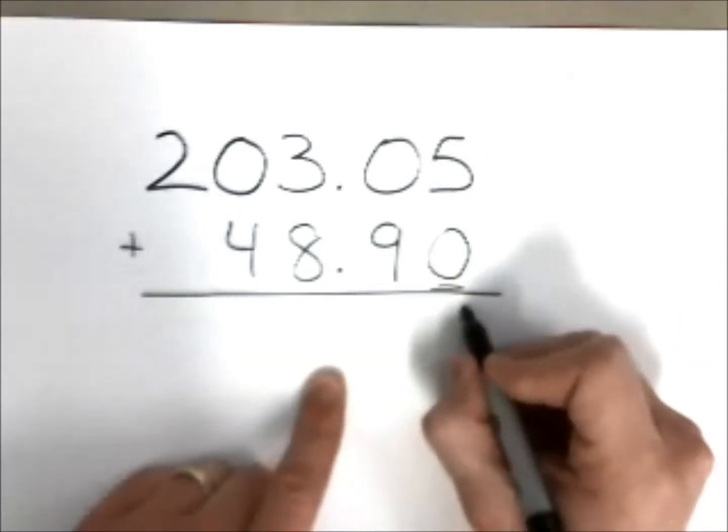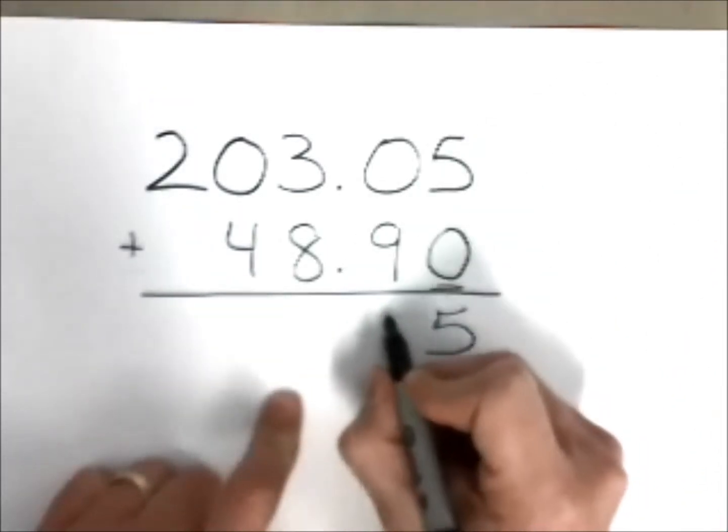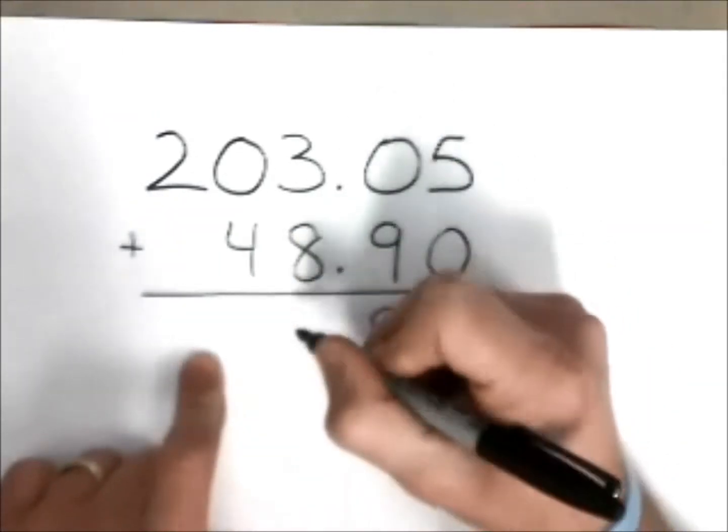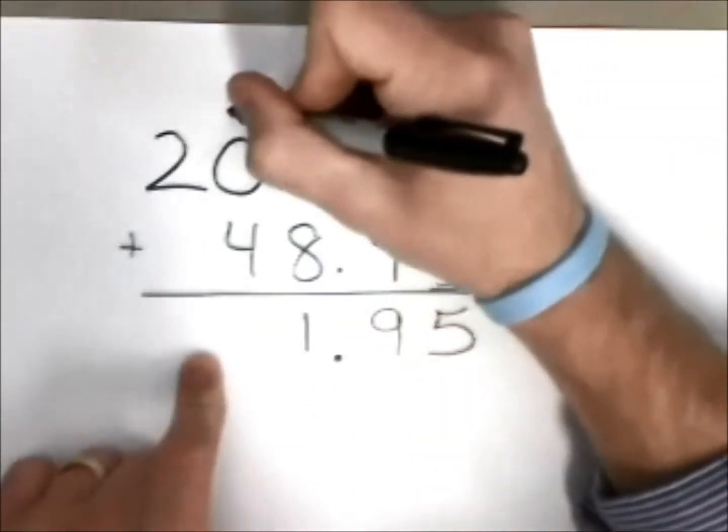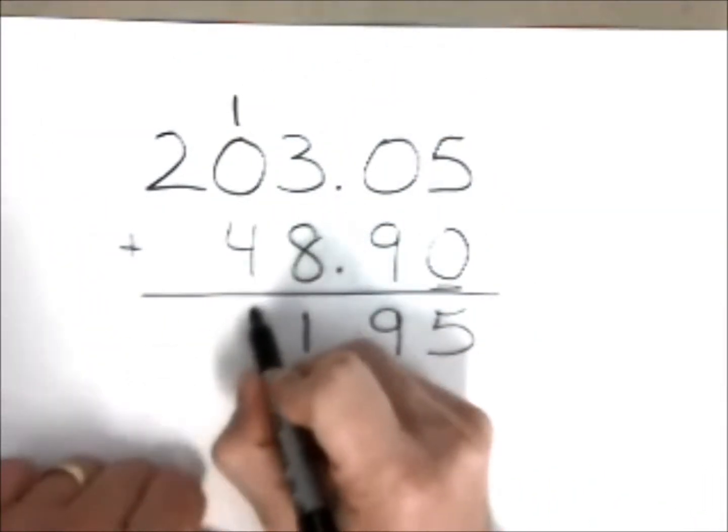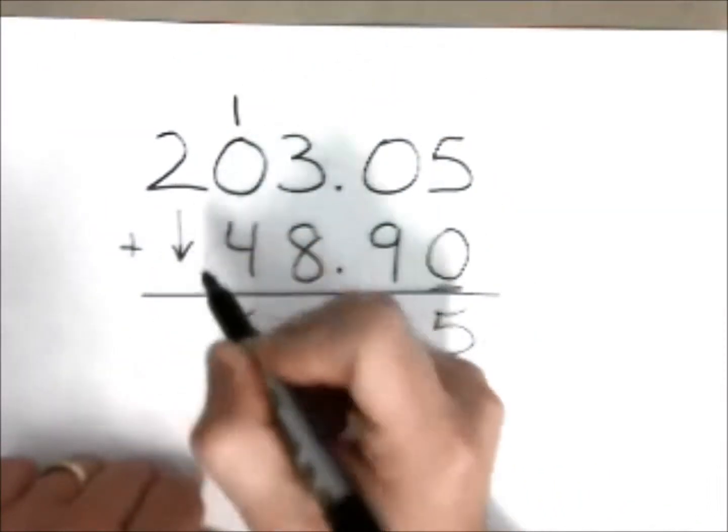So we put that there. Five and zero is five, nine plus zero is nine, decimal point straight down, three plus eight is eleven, carry or group a one, one plus zero plus four is five, and this two just falls down nice and neat.